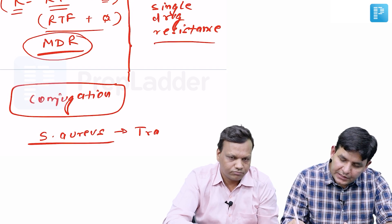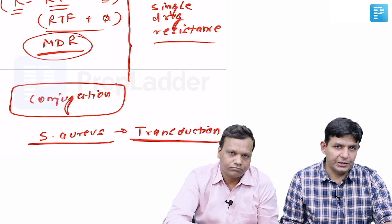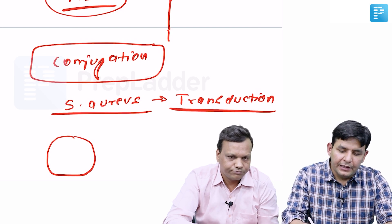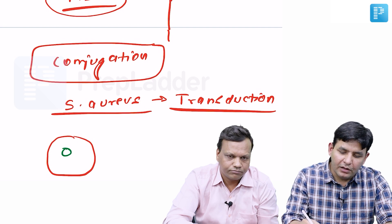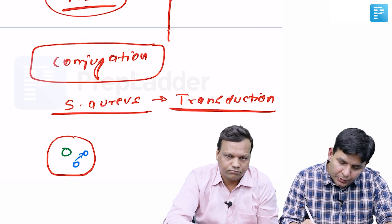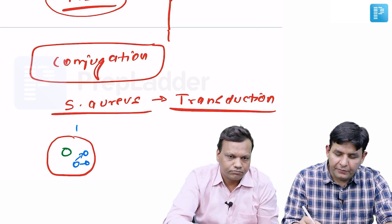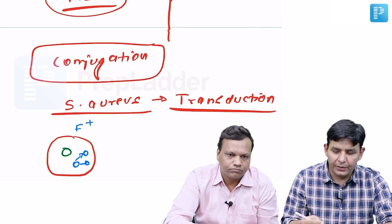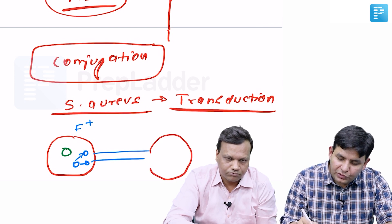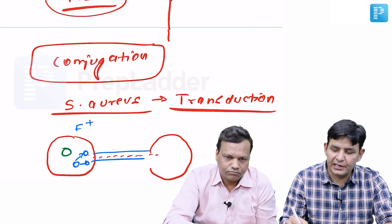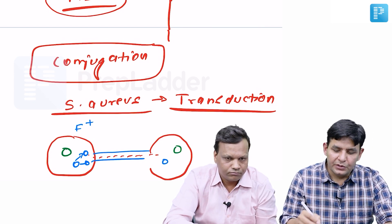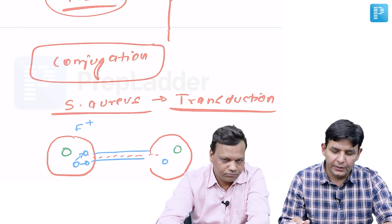Drug resistance in Staphylococcus aureus occurs by transduction. In conjugation, a bacterium has its own nuclear material plus a plasmid that is a determinant of resistance. Since plasmids are self-replicating, an F-positive bacterium forms a conjugation tube with another bacterium, and through this tube the resistance plasmid transfers to the recipient, which then also develops drug resistance. Conjugation is found mostly in most bacteria.